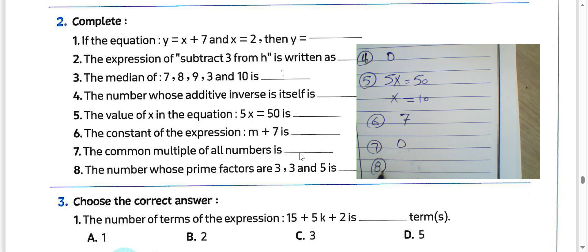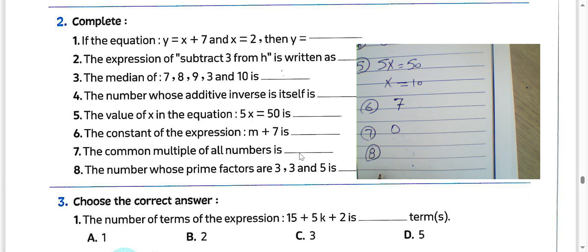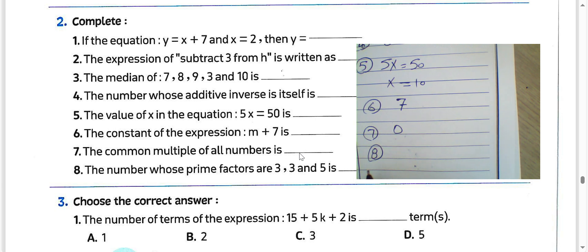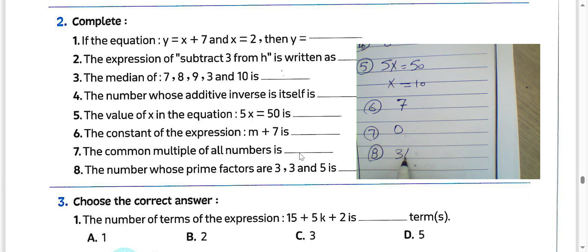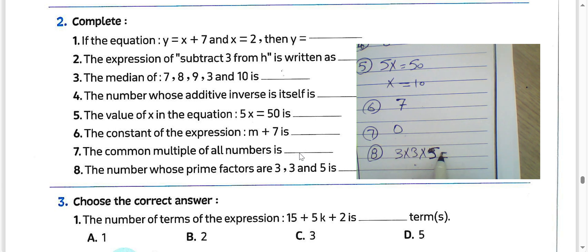Question 8: the number whose prime factors are 3 times 3 times 5. It will be 9 times 5, which equals 45.